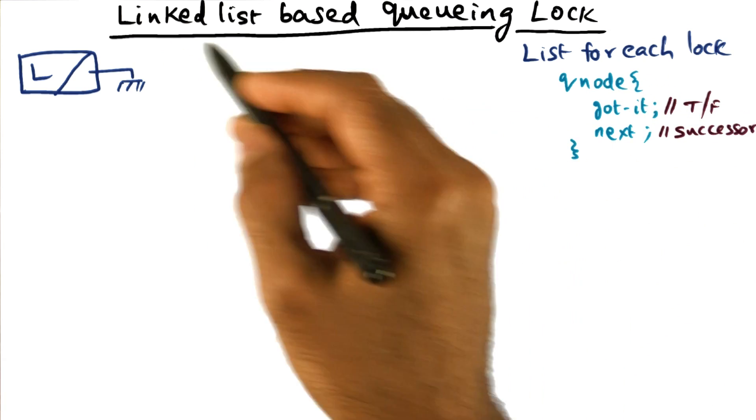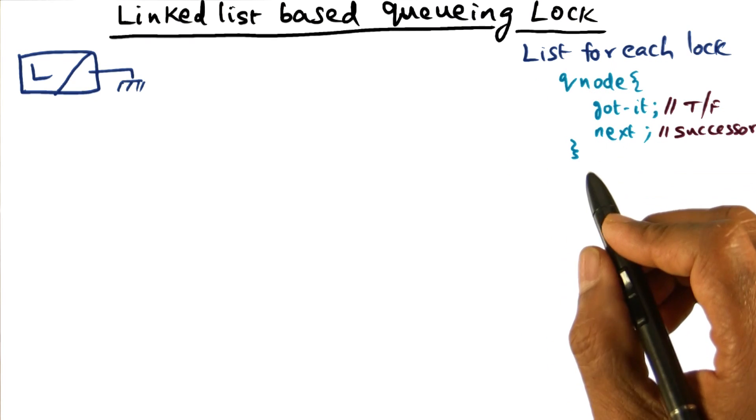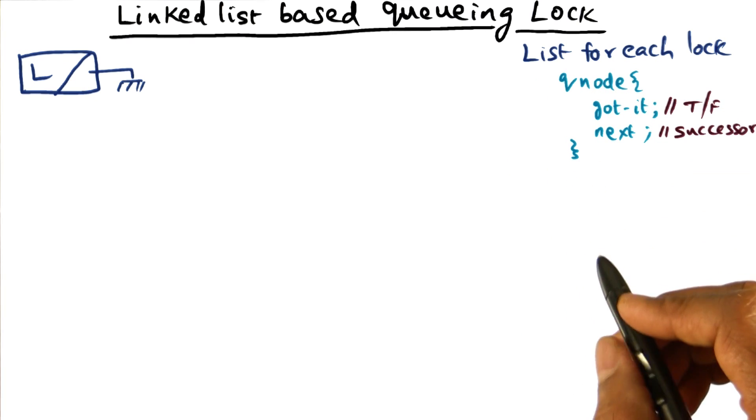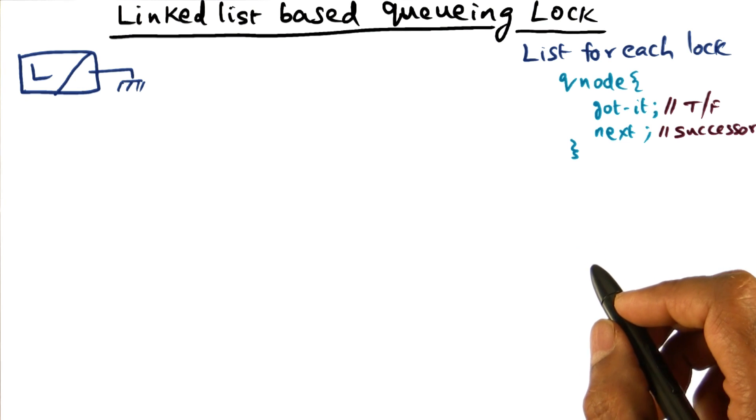This particular linked list-based queuing lock algorithm is due to the authors of the paper I've prescribed for you in the reading list, namely Mellor, Crummy, and Scott. Sometimes this particular queuing lock is also referred to as the MCS lock.